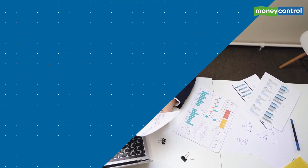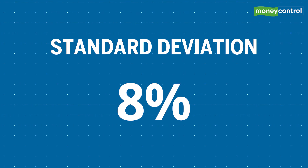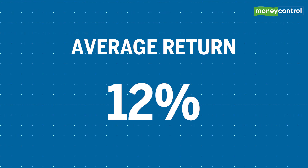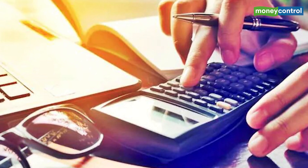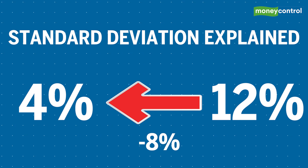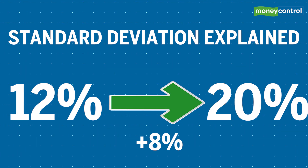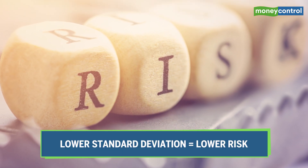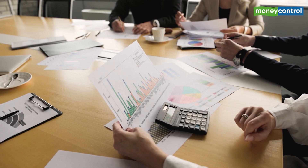For example, if a scheme has a standard deviation of 8% and an average return of 12%, it means that scheme has a tendency of deviating by 8% from its expected average return, and may give returns anywhere in the range of 12 minus 8, which is 4%, to 12 plus 8, which is 20%. Naturally, the lower the standard deviation, the lower the risk.